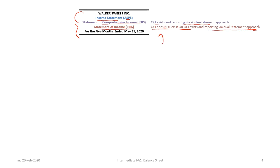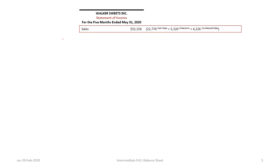OCI does not exist in our example, so we will title this the statement of income. Remember that you need a period — for the five months ended May 31st, 2020. Next, we begin our income statement with our sources of revenue. Sales in our example for Walker Suites Inc is determined based on $22,770 in cash sales, plus $5,320 in collections on accounts receivable, plus $4,226 on uncollected accounts receivable.